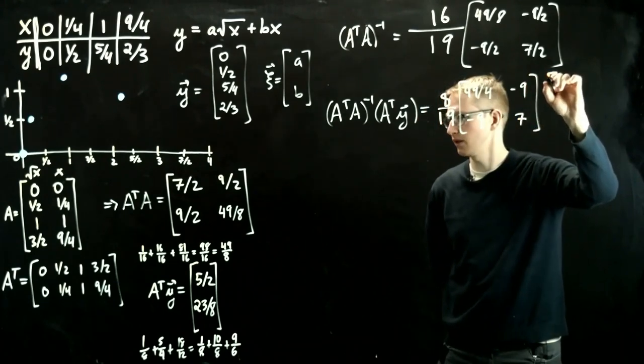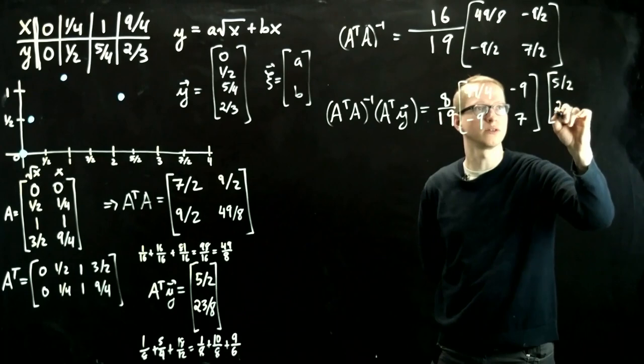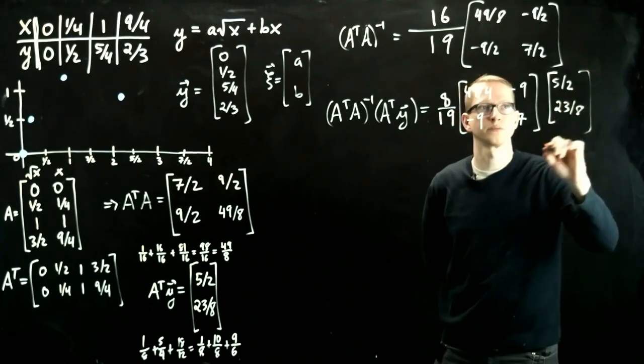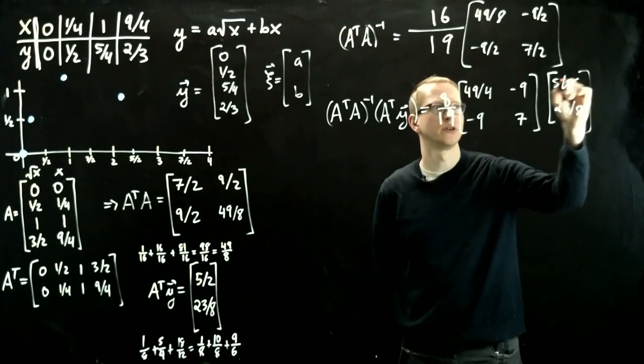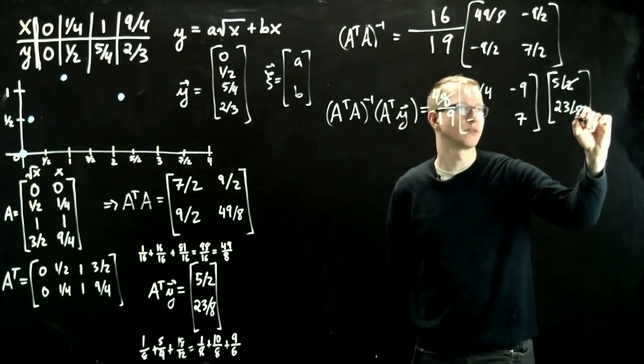Apply to this vector here, 5 halves, 23 eighths. So in fact, we can even knock down another factor of 2. So this gets rid of that 4, and that's a 4.